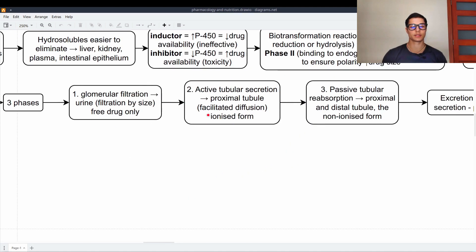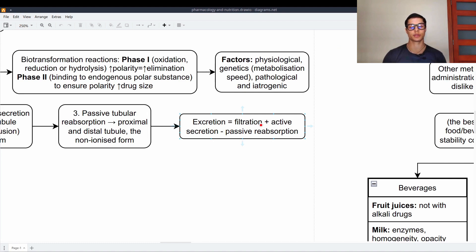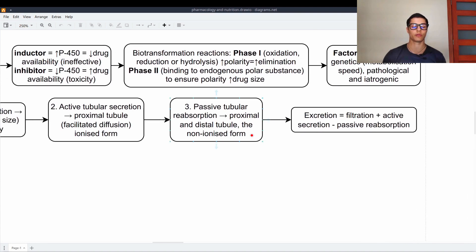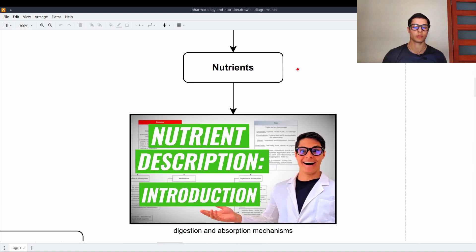So you have to know that there is one step for each. Free drug, glomerular filtration. Ionized form of the drug, active tubular secretion. Non-ionized form, tubular reabsorption. Therefore, the excretion is the filtration plus the active secretion minus the passive reabsorption. As you can see, non-ionized form gets reabsorbed and gets in the bloodstream again.